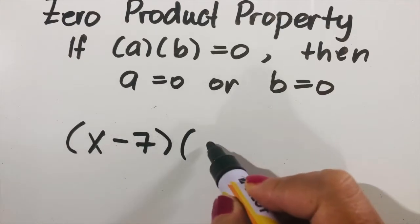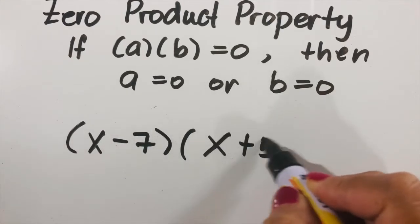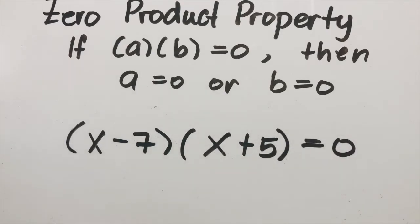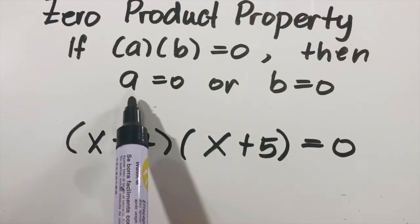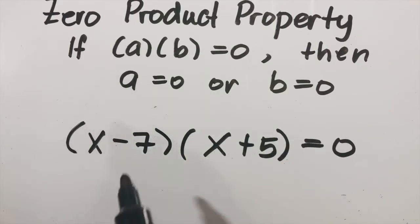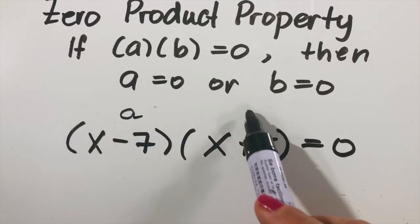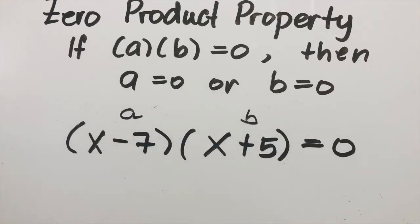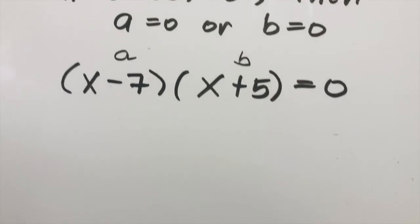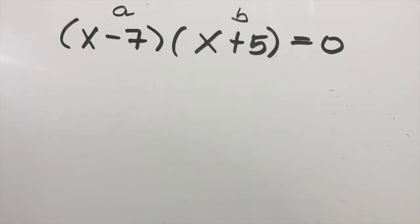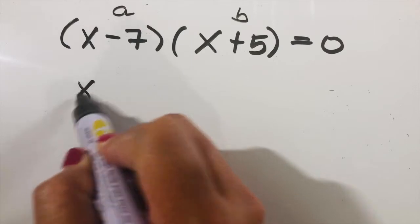Let's have this example: (x minus seven) times (x plus five) equals zero. How will you find the values of x? It says to set a equal to zero — so this is our a, which is x minus seven, and b is x plus five. We will set each of them equal to zero.